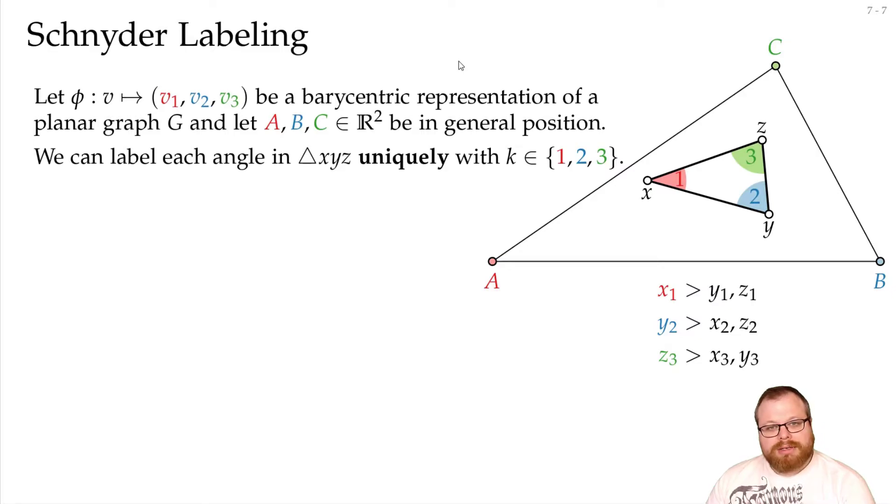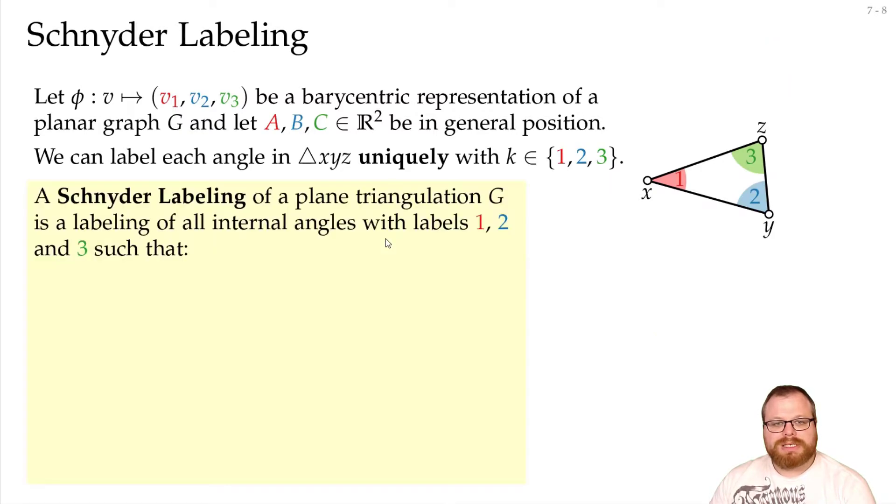For our algorithm, however, we have to go the other direction. We have to find a barycentric representation, and we want to find one based on a labeling. So, we have to define first what kind of properties such a so-called Schnyder labeling must have. We want to label all internal angles with 1, 2, and 3, such that at every face, it looks exactly like this.